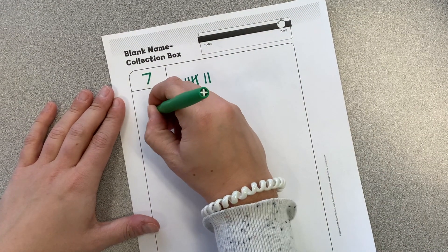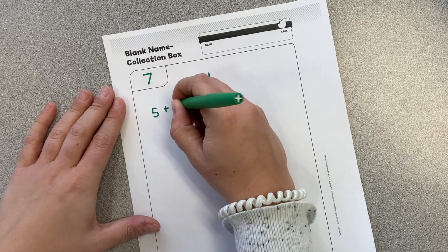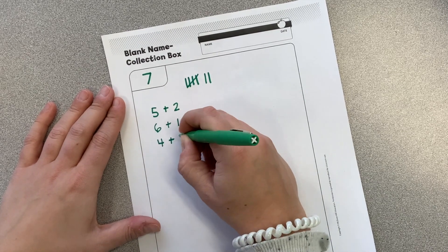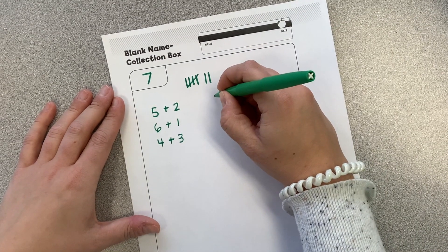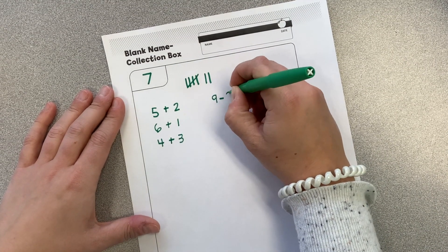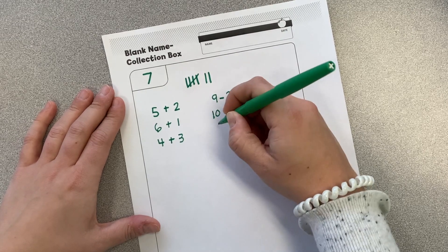Oh yeah, five plus two. I could do some subtraction. Seven could be nine minus two, or ten minus three, or eleven minus four.